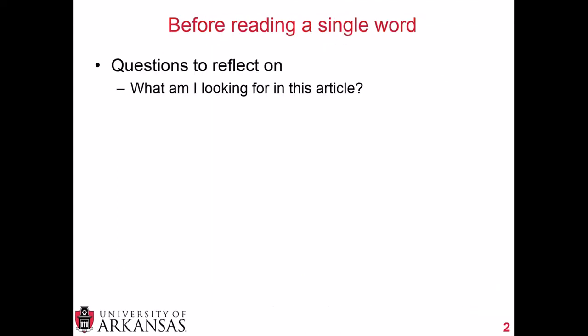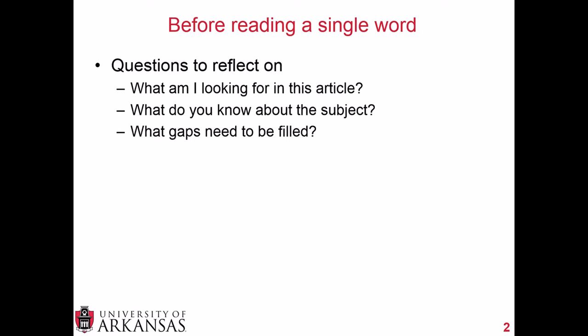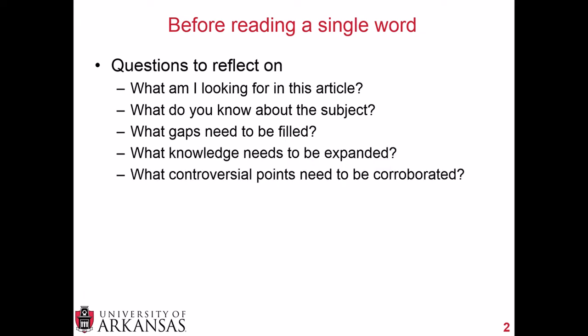I understand that it is intimidating to start reading journal articles. They're very dense, they have a lot of information, and they're not really written in a reader-friendly way most of the time. So this is intended to help you break down journal articles. But I recommend, before reading a single word, ask yourself some very pointed questions: What are you looking for in this article? What do you already know about the subject? What gaps need to be filled? What knowledge needs to be expanded? And are there controversial points or differences of opinion that need to be corroborated?